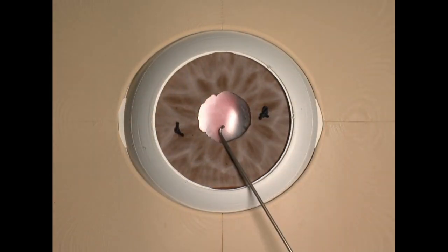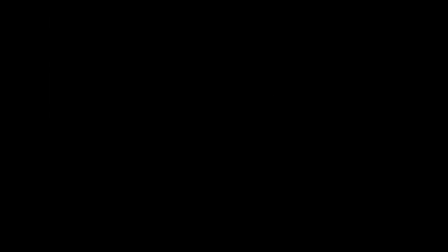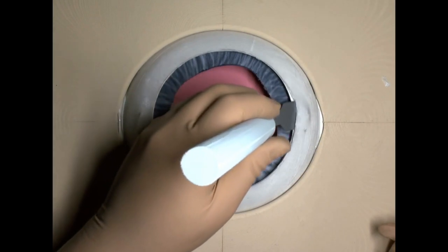In sclero-fixation by suture, the knots must be either buried or placed under a flap. Flap can be constructed from limbus.